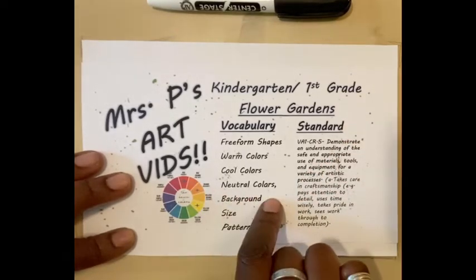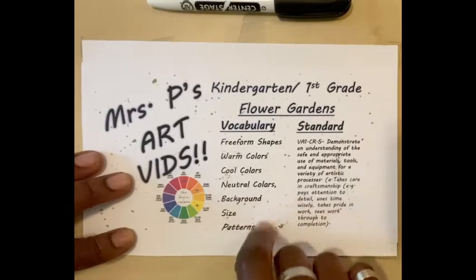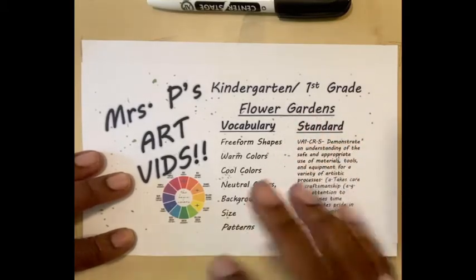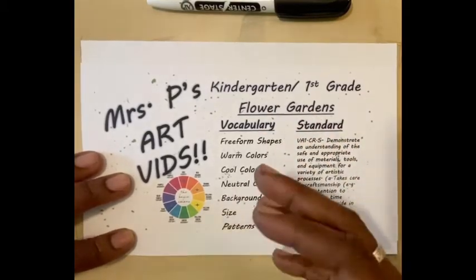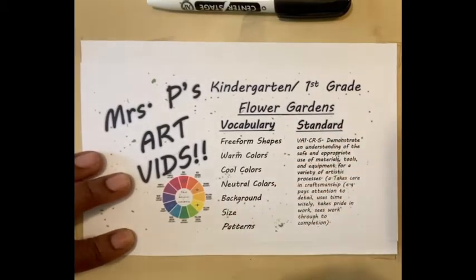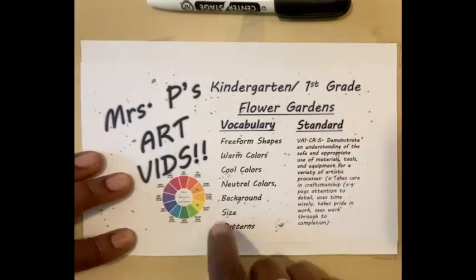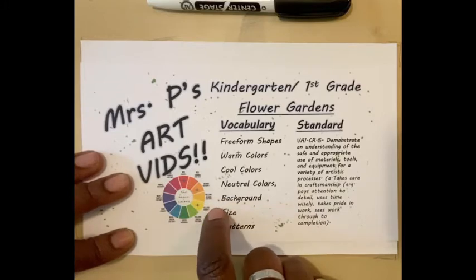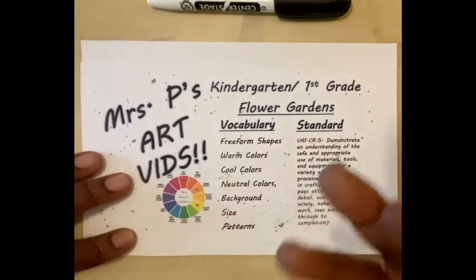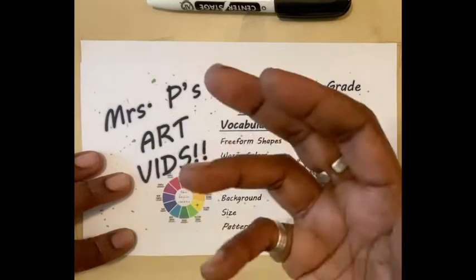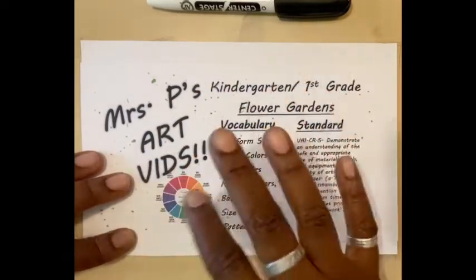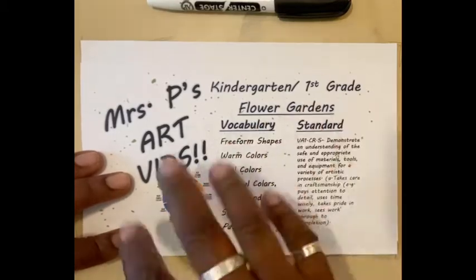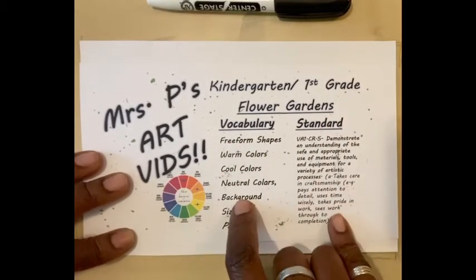We're also going to be using neutral colors, which are natural colors — sometimes called organic colors or earth tones — because we often see these colors in the earth, in our skin, in the ground, and in our hair. Neutral colors are black, brown, white, gray, and tan. Think about things that grow, think about our skin tones, our eye colors, and our hair colors — those all fall under the neutral color family.